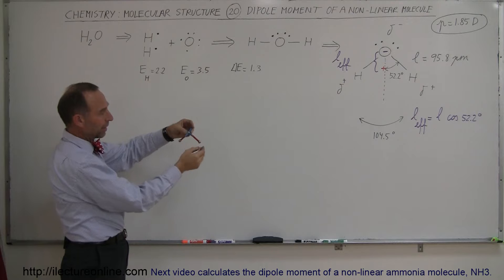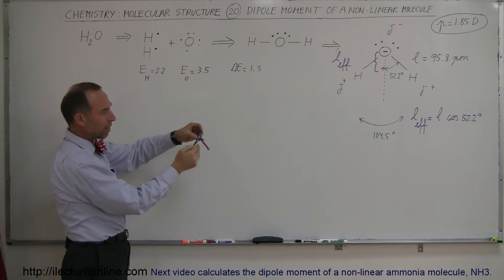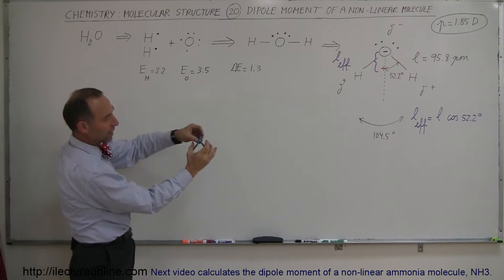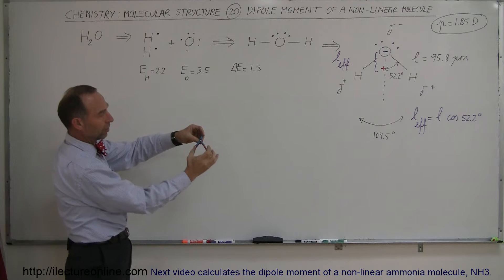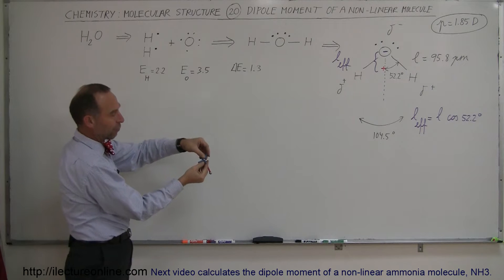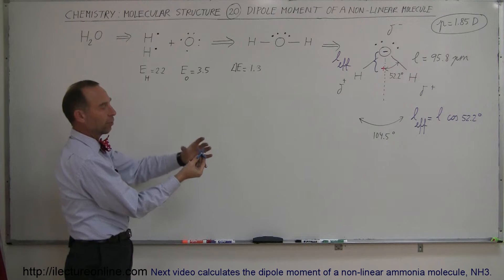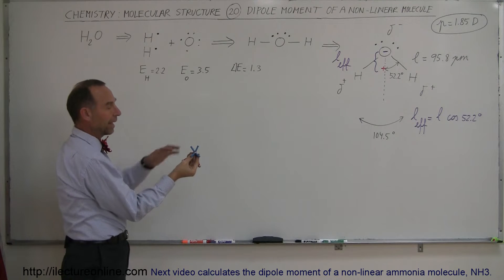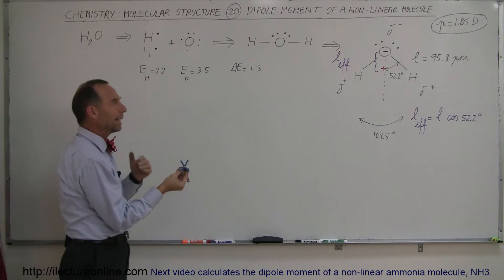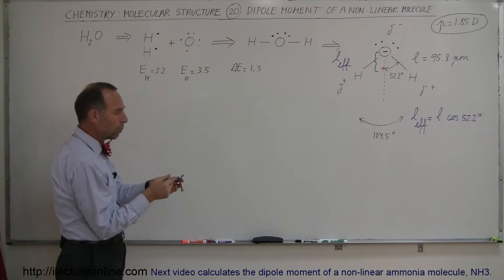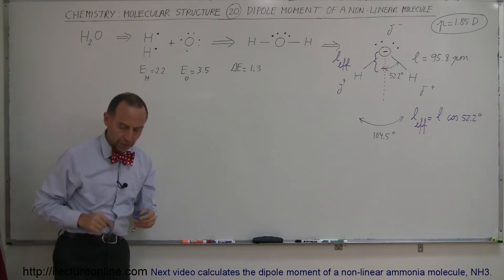One free electron pair kind of makes the third leg of the pyramid, sticking out here. So we have the two hydrogens and the third pair, and then we have the fourth, the other pair of free electrons sticking straight up, forming that tetrahedral shape. And those free electrons do also play a role in the dipole moment of the water molecule.